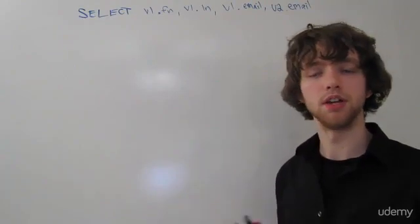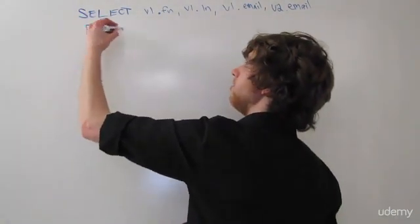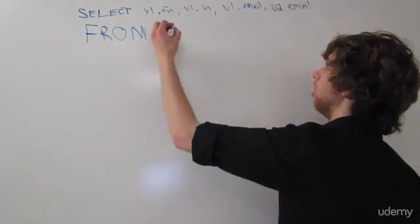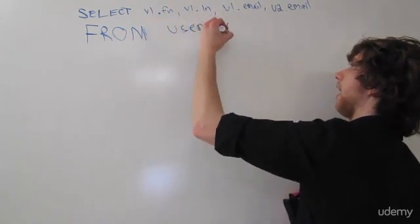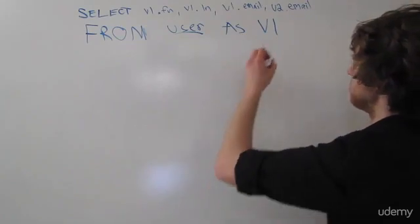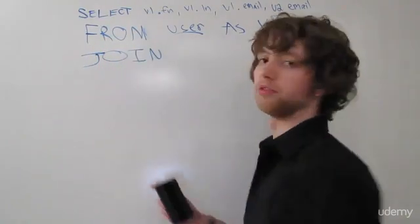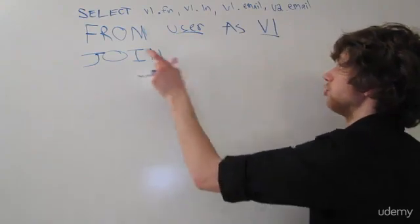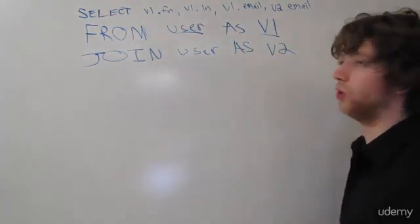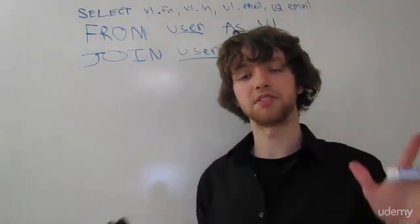Now that we know what columns and what tables we want to take the data from, we actually have to put the from statement and say something like from, then put the table we're taking this data from. This is where we're going to define our alias. So we could say from user as V1 — that is going to basically tell the database that the user table is known as V1. Now we can do a join. This is going to default to an inner join if you just use join. We could say join user as V2 — that is going to basically tell it that user is also going to be known as V2, but considered a different table in this situation.